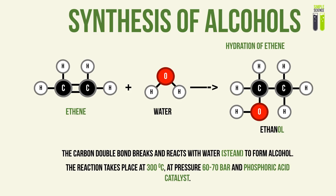The synthesis of alcohols can also go a different way — a method we looked at previously in the chapter on alkenes, known as hydration. This is when we react water in the form of steam with ethene to form an alcohol. This reaction takes place at a very high temperature of 300 degrees Celsius, at a pressure of 60 to 70 bars, and with a catalyst of phosphoric acid.